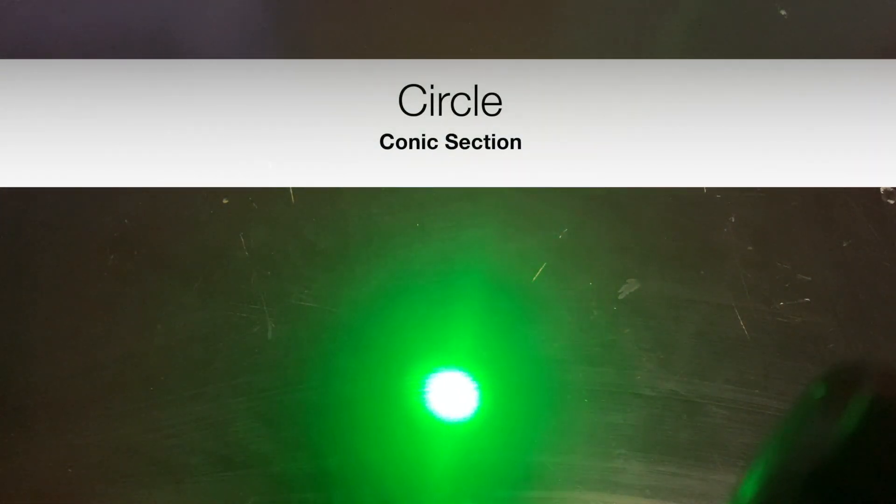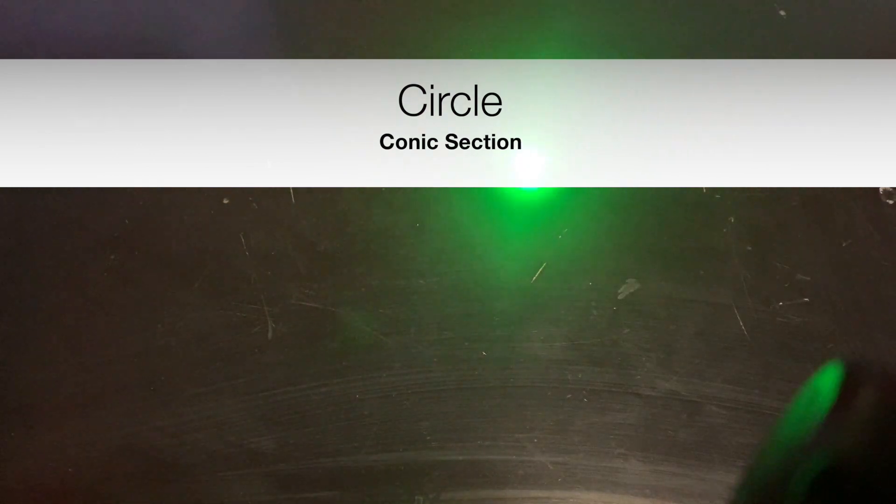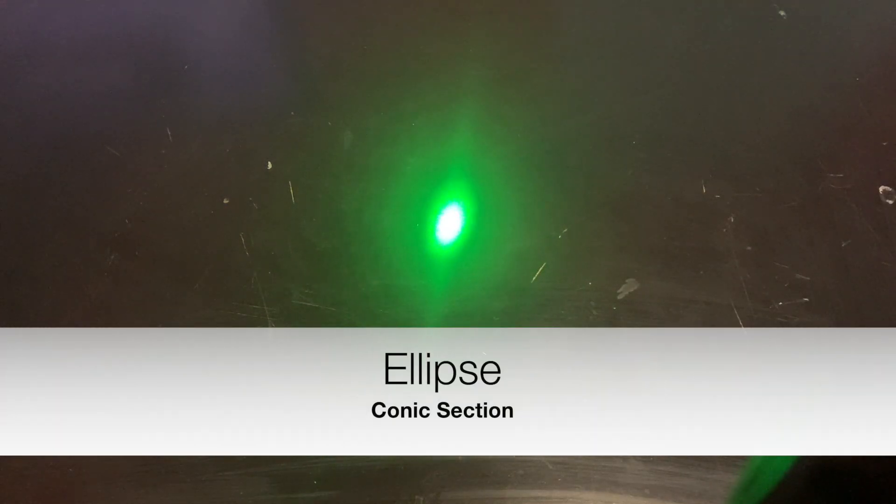So first and foremost, what we're going to get is the humblest conic section of them all. This is the circle, ladies and gentlemen, okay? And now if we stretch the circle a bit, if we go ahead and bring the laser light closer to the table, we're going to get something resembling an ellipse, okay? This is an ellipse.